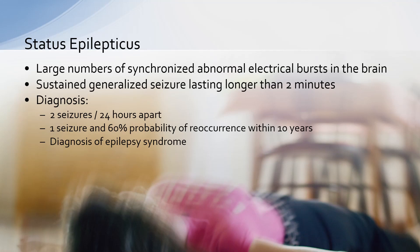The one we really worry about is the patient who has status epilepticus, because this patient may continue to have seizures to the point of anoxic brain injury. We have large numbers of electrical bursts in the brain and the patient ends up with a sustained seizure lasting longer than two minutes. Diagnostically: two seizures 24 hours apart, one seizure with a 60% probability of reoccurrence within 10 years, or a diagnosis of epilepsy syndrome.